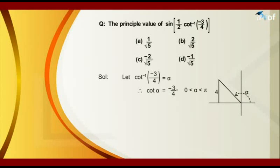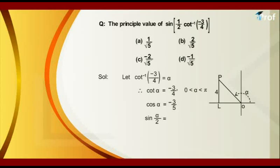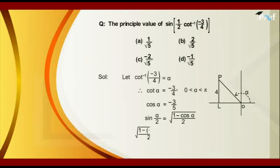Let O be the origin, P the point, and L be the projection of P. Therefore, OP is equal to 5. Therefore, cos alpha is equal to minus 3 upon 5, and sin(alpha/2) will be equal to the square root of (1 minus cos alpha) divided by 2, which comes out to be equal to the square root of (1 minus (minus 3 upon 5)) divided by 2, which turns out to be equal to 8 upon 10, that is equal to 2 upon root 5.